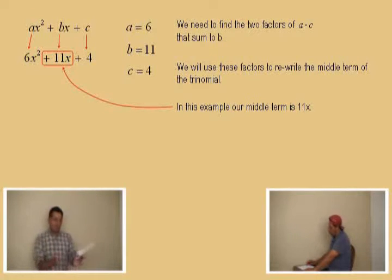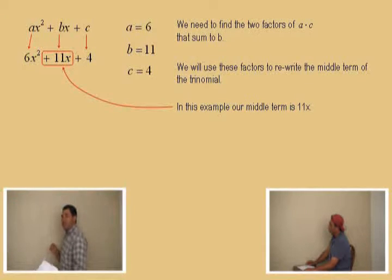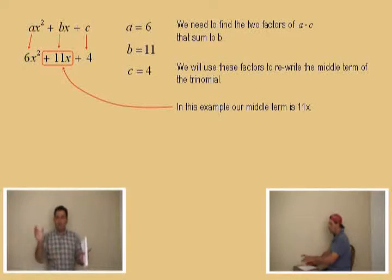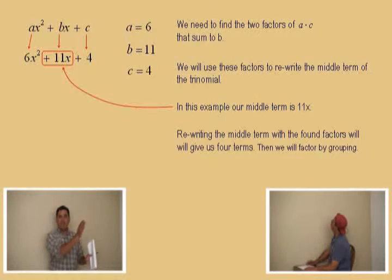All those give you 11x. But we're looking for these specific factors of a times c to rewrite that plus 11x. Why are we going to do that? Because what we're going to do is if we rewrite that plus 11x using two terms, then we will have four terms. And if we have four terms, that's where we do the factoring by grouping.